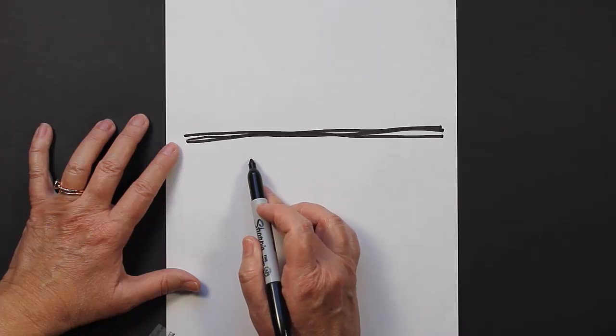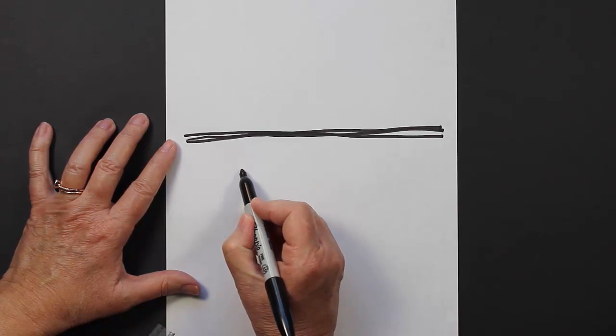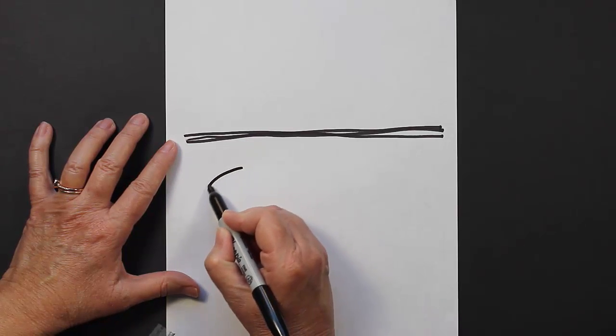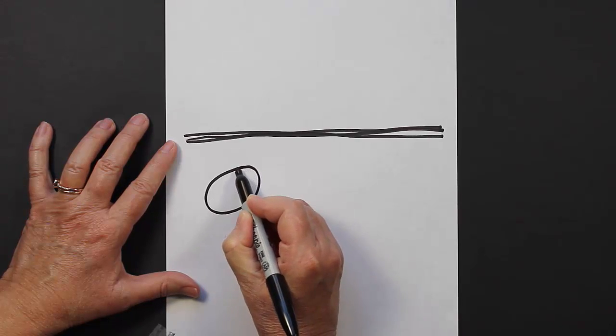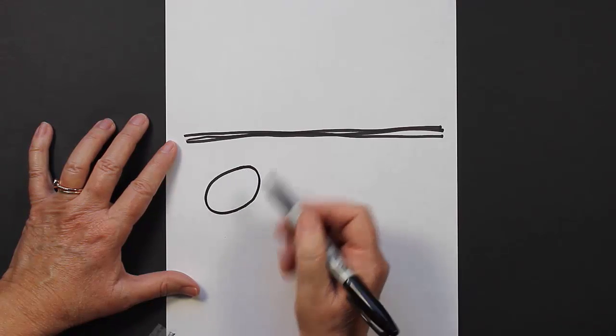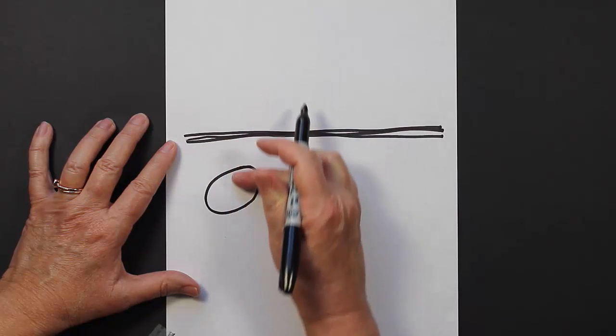Now over to the left a little bit, we're going to make an oval that looks like this. Tilt it a little bit to the side, so it's to the left and then down.